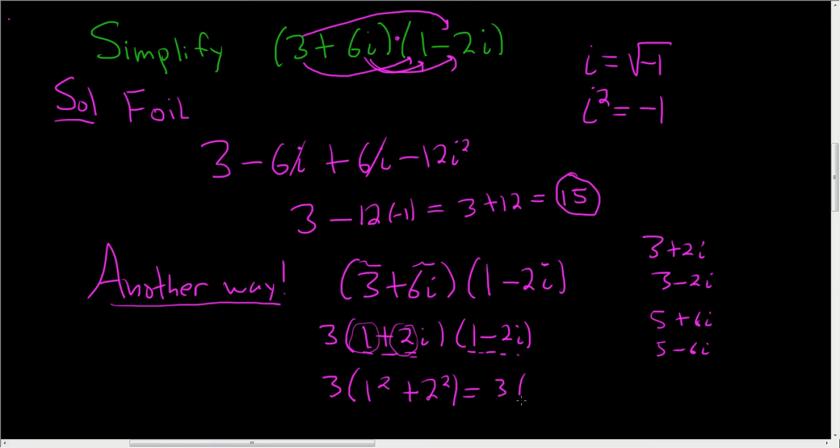So you get 3 times, let's see, 1 plus 4, which is 5. So you get 3 times 5, which is 15. Kind of neat. I didn't expect that to happen. I hadn't worked out the problem. So yeah, that's how you multiply complex numbers.